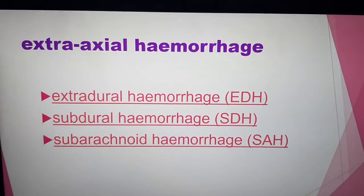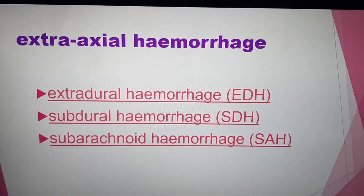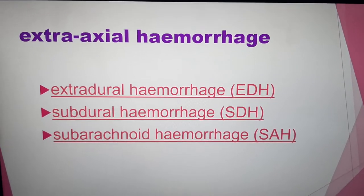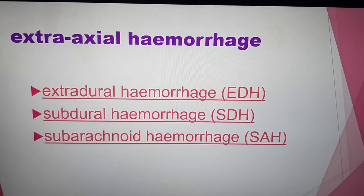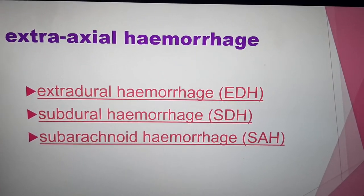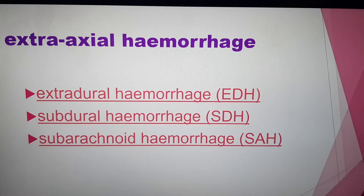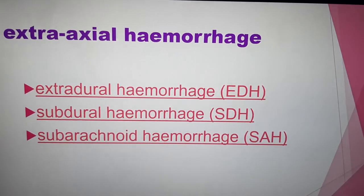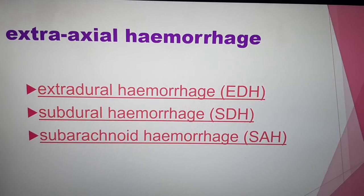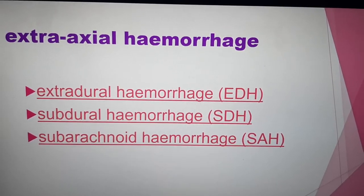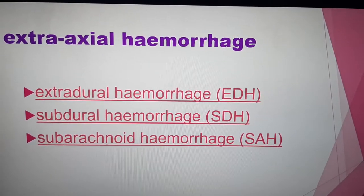We have three types of extraaxial hemorrhage according to location. Extradural hemorrhage occurs outside the dura, between the bone and the dura. Subdural hemorrhage is located under the dura, in the dural space. Subarachnoid hemorrhage occurs under the arachnoid, in the arachnoid space.